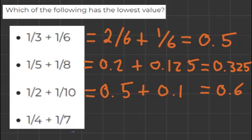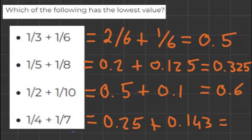And for the final one, 1 fourth equals 0.25 plus 1 over 7 which equals 0.143. And together if we round it, it's going to equal 0.39.